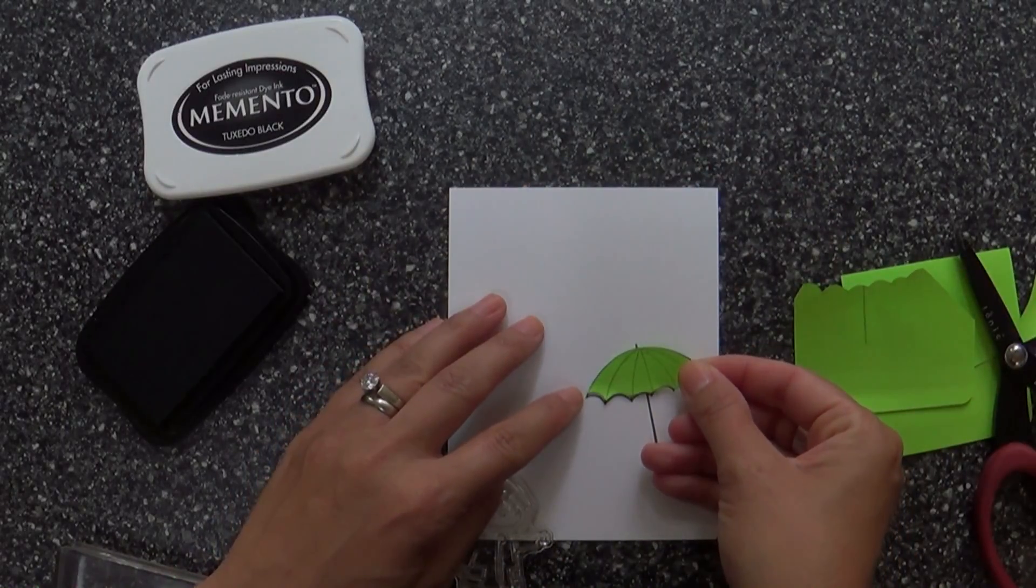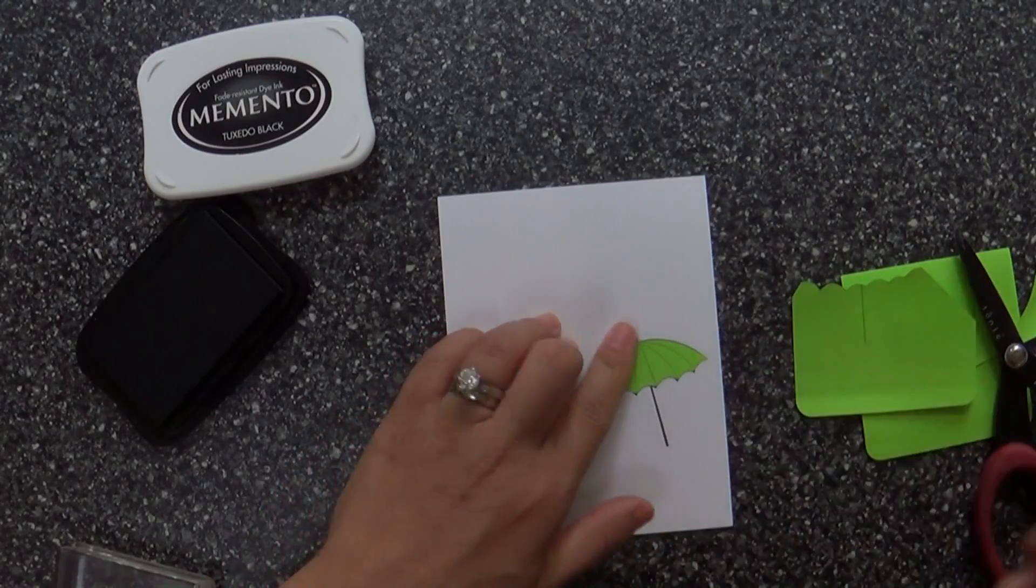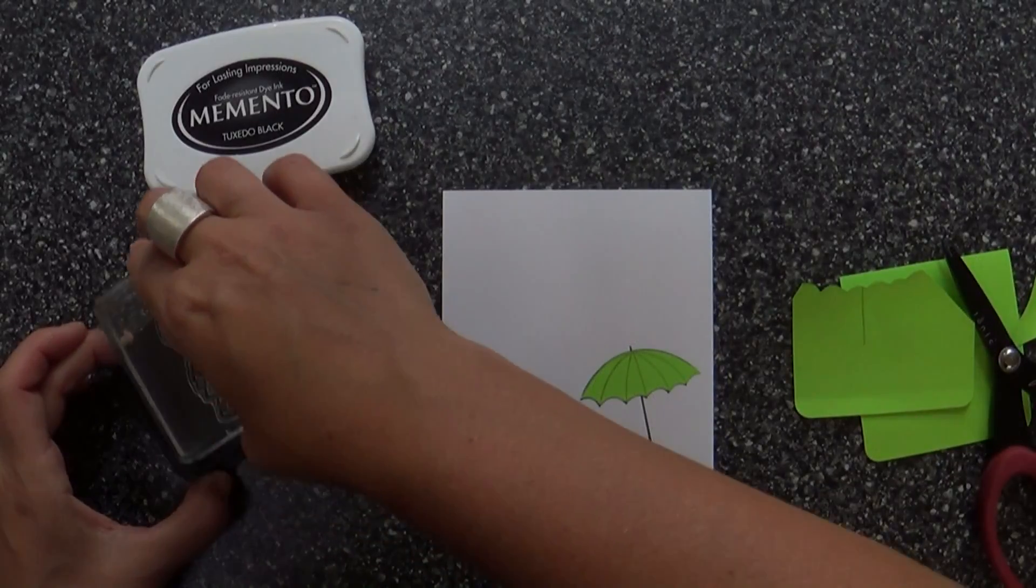Anytime I can pull out my Mama Elephant pigment inks, I'm going to pull out my Mama Elephant pigment inks because they blend. You know it, you know what's coming next. They blend like butter.